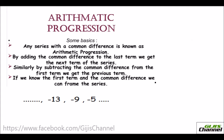Before I start, let me give you some basic information. Any series with a common difference is known as an arithmetic progression. If the difference between two terms in a series is the same, then you call it an arithmetic progression. To get the next term of an arithmetic progression, all you need to do is add the common difference to the last term of that series, and so you get the next term.